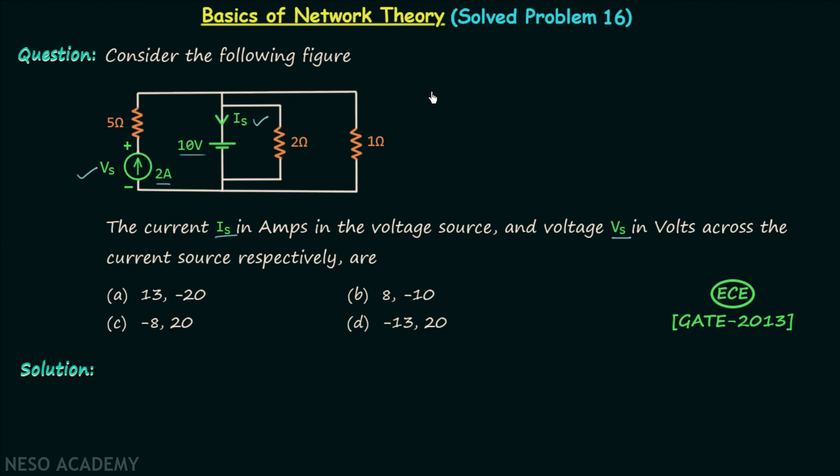Now I will provide you the solution in which I will first calculate current Is and then I will calculate voltage Vs. And I want to calculate current Is by applying KCL at this node. This node and this node have the same potential therefore they will act as a single node, and hence we can say that at this node